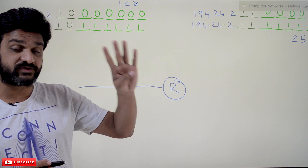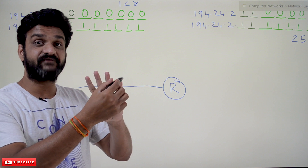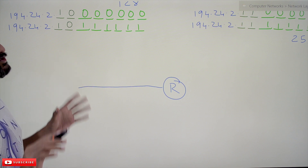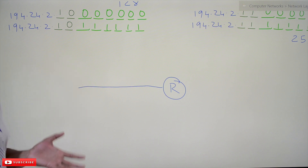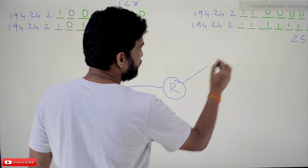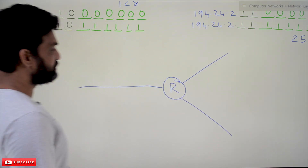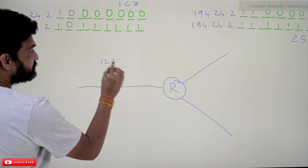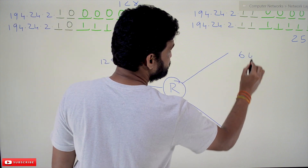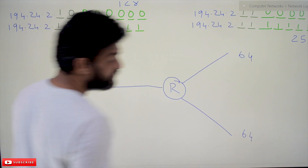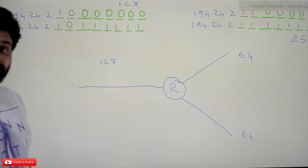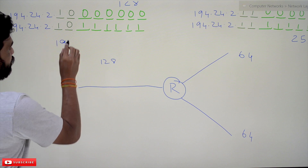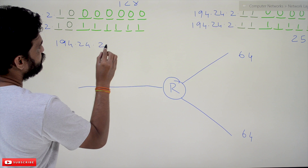The requirement is we need three sub-networks. So far in our previous examples we covered four sub-networks, each having an equal number of systems. Now we want to divide the entire 256 systems into three sub-networks: the first sub-network will have 128 systems, the second will have 64 systems, and the third will have 64 systems. The IP address is 194.24.2.x.